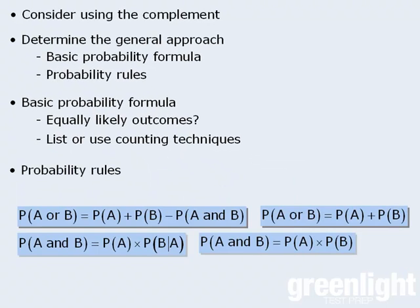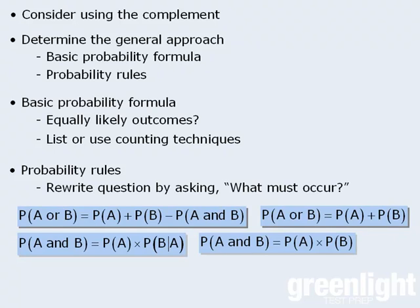If you decide to use one or more of the probability rules, it might be useful to first rewrite the question by asking, what must occur in order to achieve the target outcome. You will find that rewriting the question will often help you determine whether you need to use AND probabilities, OR probabilities, or both.